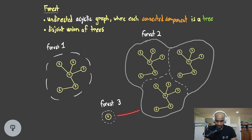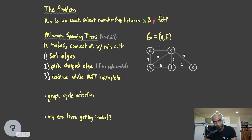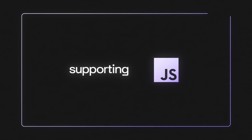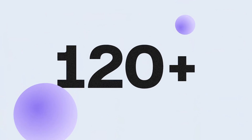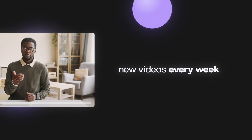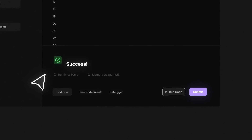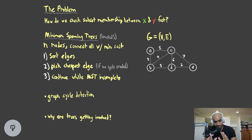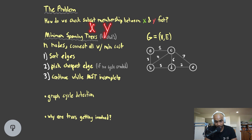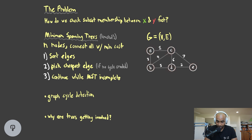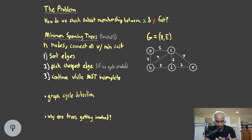Now that our feet are rooted in the fundamentals of the structures we're working with, let's think about the problem we're trying to solve. The question is: how do we do subset operations quickly? How do we check — if you give me element X and element Y — are these items in the same set? If you have a set of vertices, being able to check whether A or D are in the same subset, the same subgraph — these are the kinds of problems in computer science where we can use a structure that gives us fast subset checking.